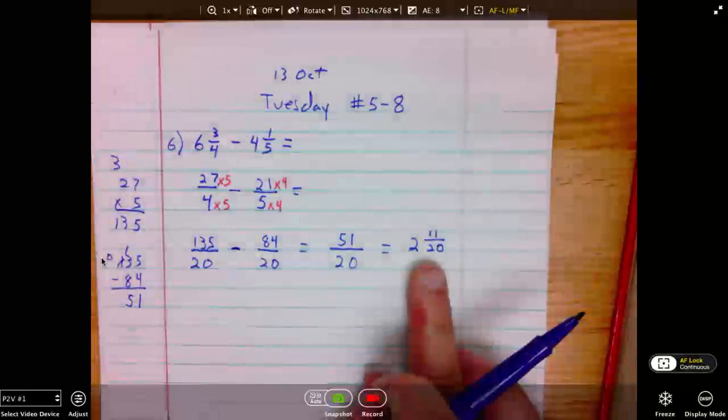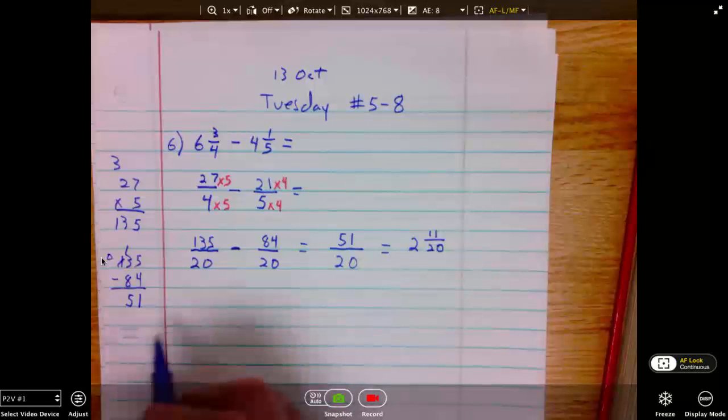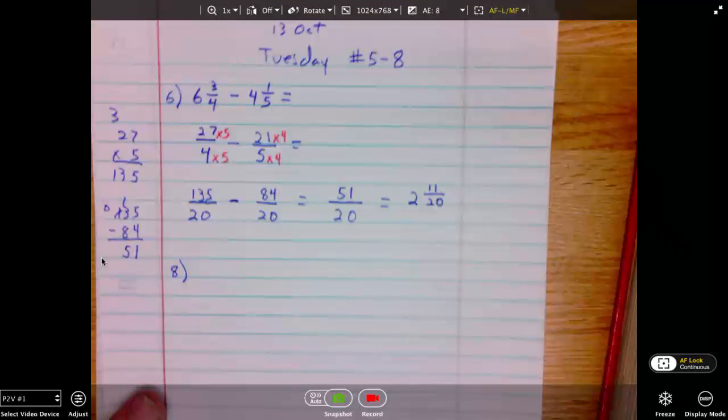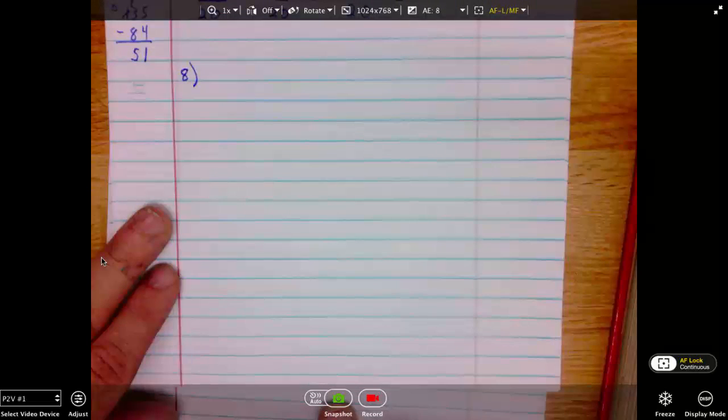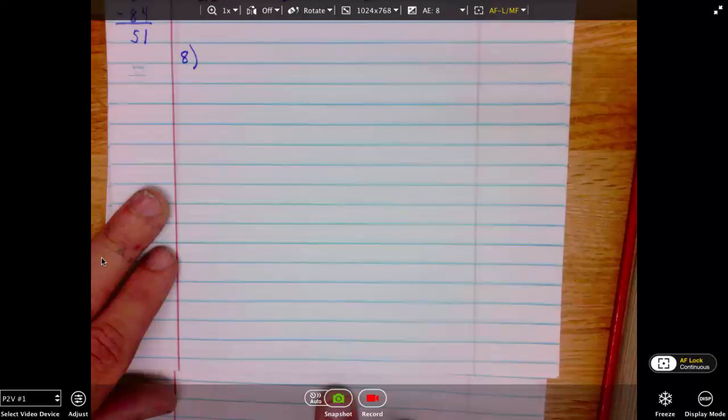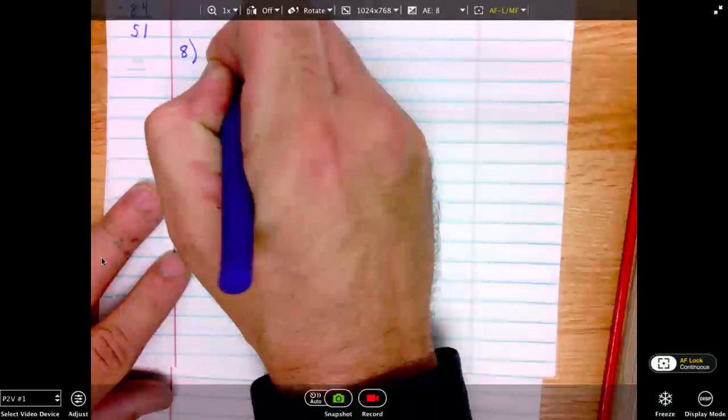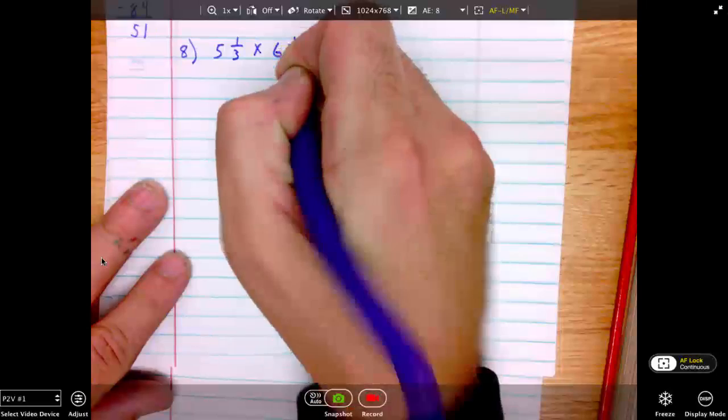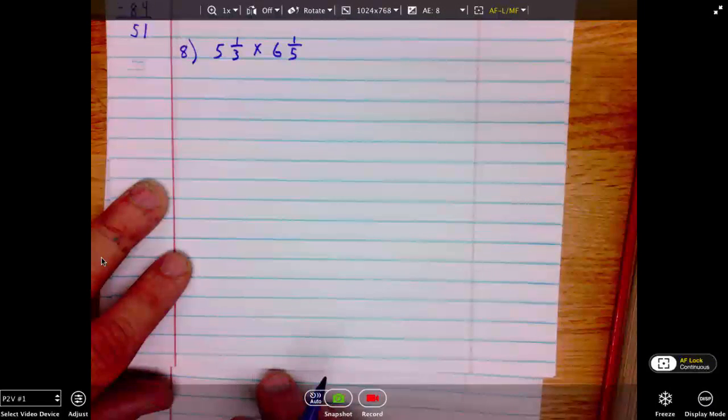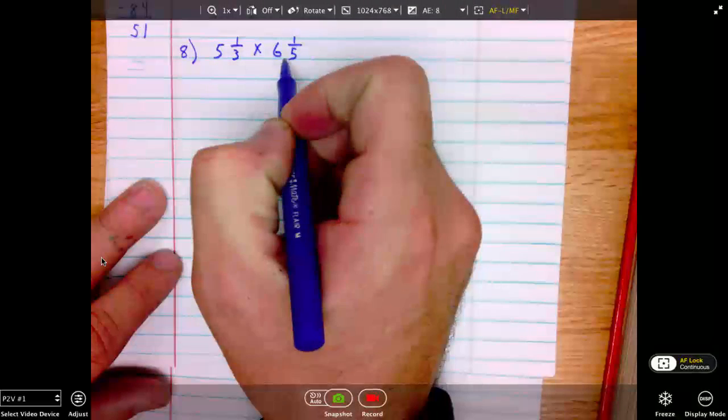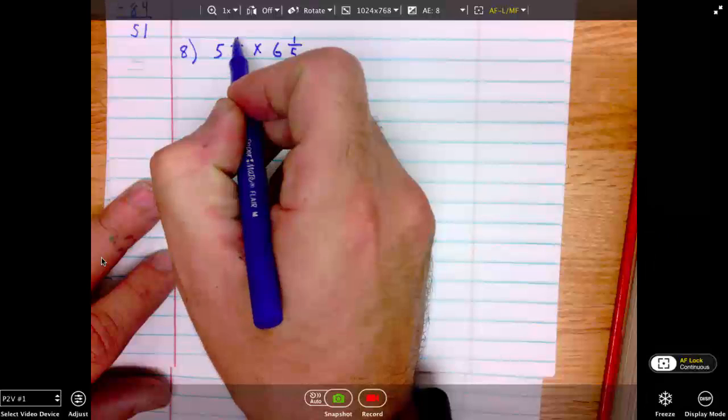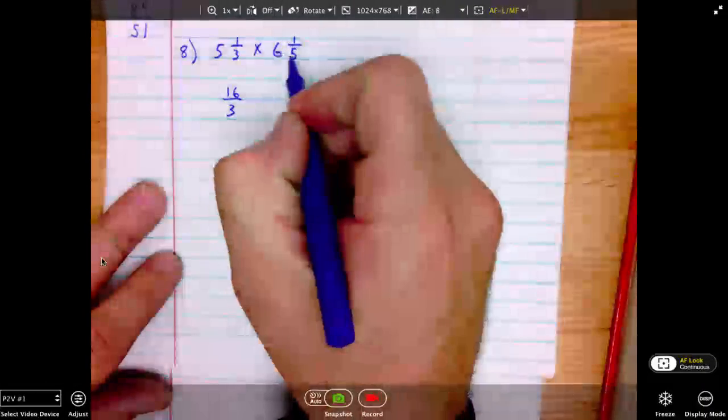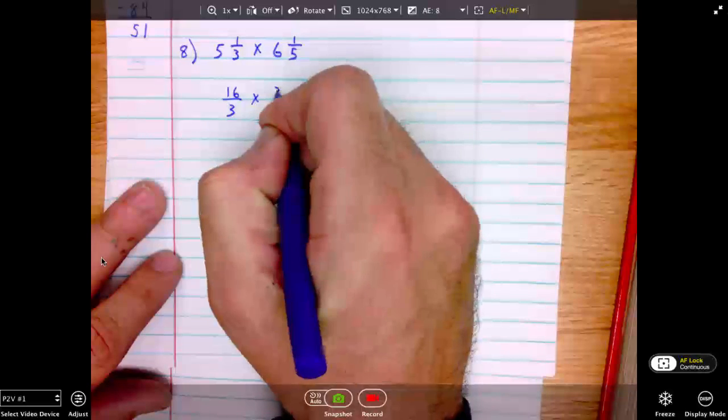The next problem we will look at is number 8. Number 8 says 5 and 1 third times 6 and 1 fifth. Again, I will convert these two mixed numbers to improper fractions. 5 times 3 is 15 plus 1 is 16. 16 over 3. 6 times 5 is 30 plus 1 is 31. 31 over 5.